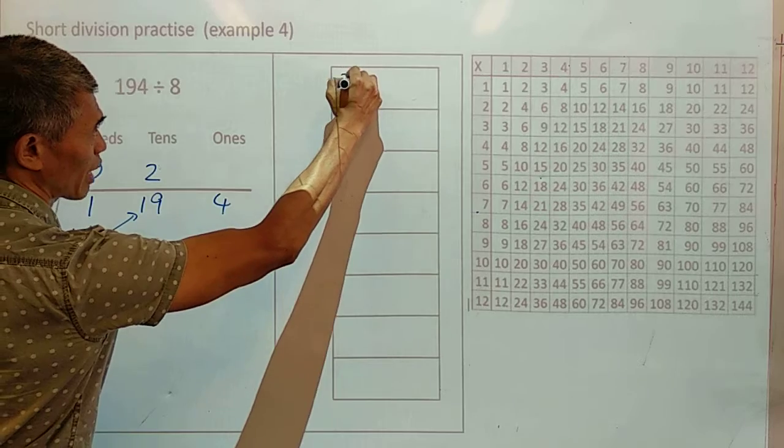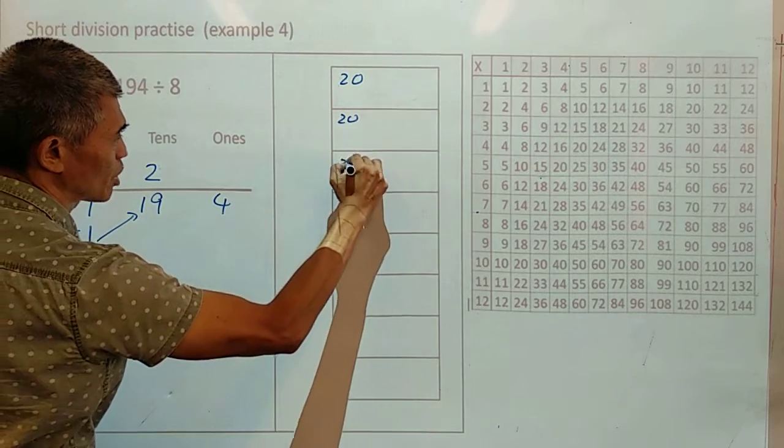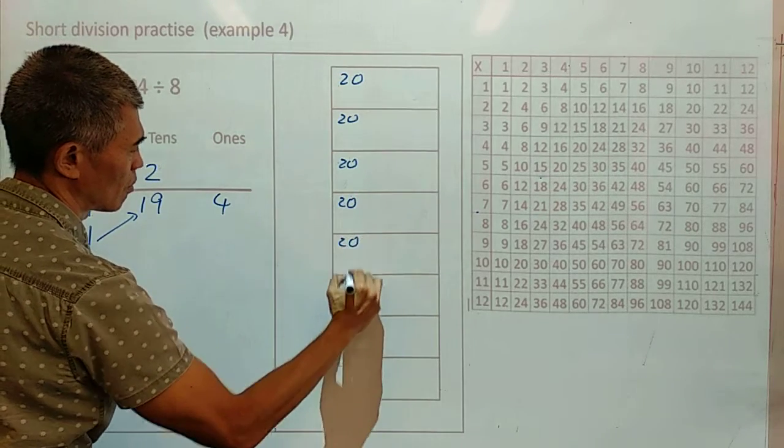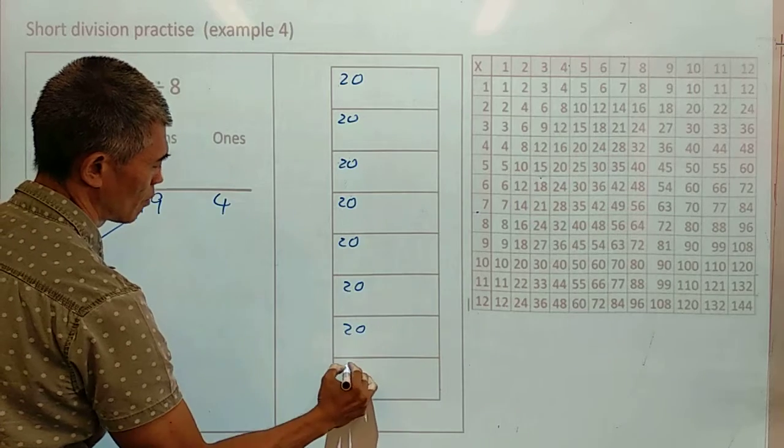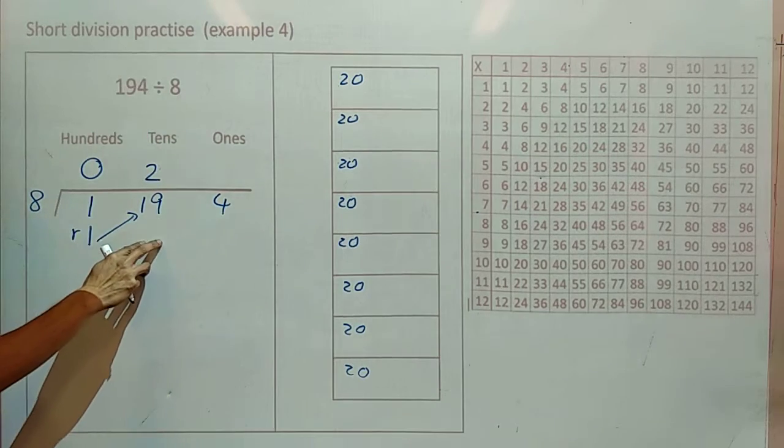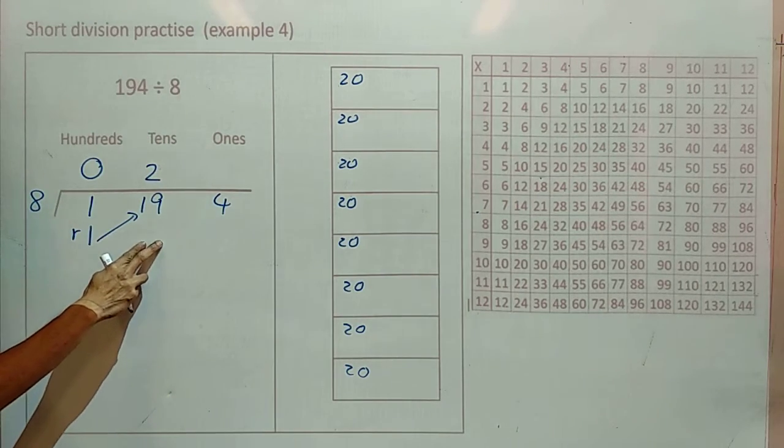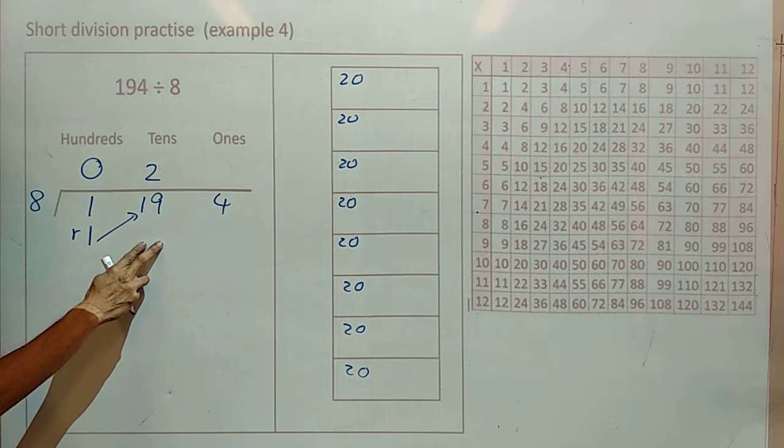That means we have a total of 16 groups of 10. So we're going to put 2 tens here, in each box. 19 minus 16 groups of 10 gives you 3 groups of 10.